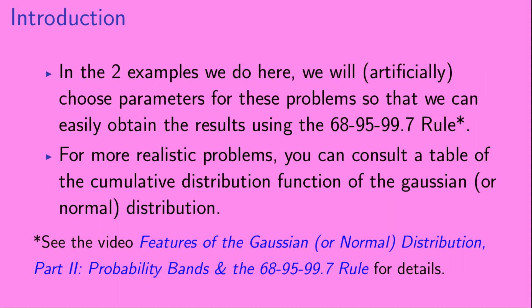In the two examples we do here, we will artificially choose parameters so that we can easily obtain the results using the 68-95-99.7 rule. If you want to know more about that, you can see the video Features of the Gaussian or Normal Distribution Part 2. For more realistic problems where that rule doesn't apply, you can consult a table of the cumulative distribution function of the Gaussian or Normal Distribution.